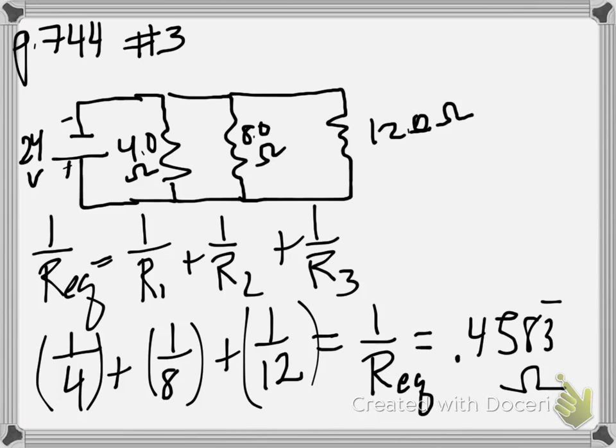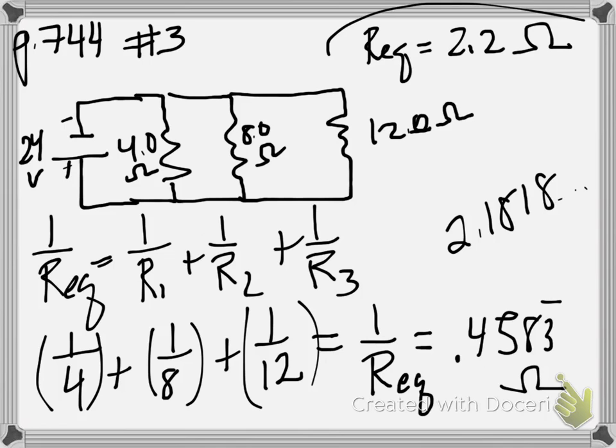If I take the reciprocal of that, I get 2.1818, et cetera. And so with one behind the decimal, the equivalent resistance on this circuit is 2.2 ohms.